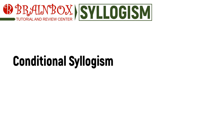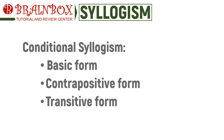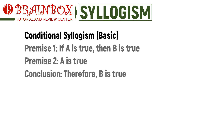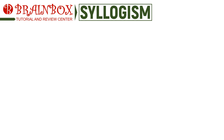The third kind of syllogism we will be discussing is the conditional syllogism. In a conditional syllogism, at least one of the premises is a conditional statement following the form: 'If A is true, then B is also true.' Conditional syllogisms can be found in three different forms: basic, contrapositive, and transitive. The basic form follows this pattern: 'If A is true, then B is true; A is true, therefore B is true.' Example: 'If George has high grades, then George is smart; George has high grades, therefore George is smart.'